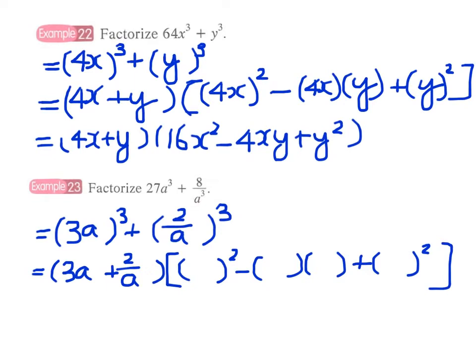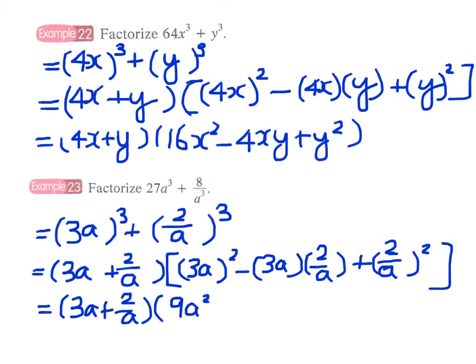3a, 3a, 2/a, 2/a. And after simplification, we have (3a + 2/a)(9a² - 6 + 4/a²). So this will be our final answer.